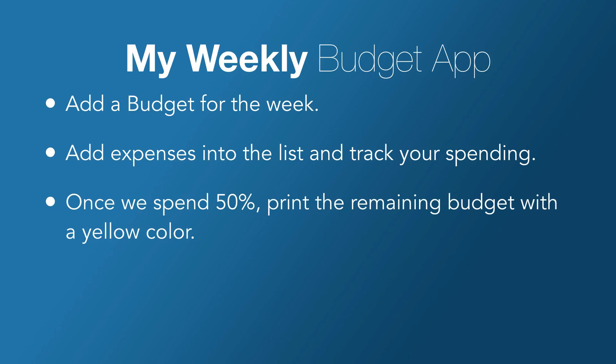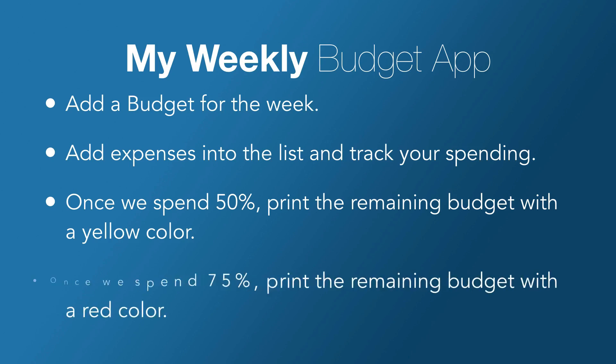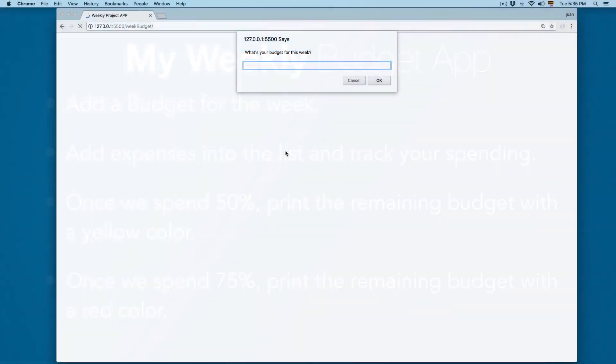we're going to print the remaining budget with a yellow color. Once we spend 75%, print the remaining budget with a red color. So let's review the project — this is going to be the project.